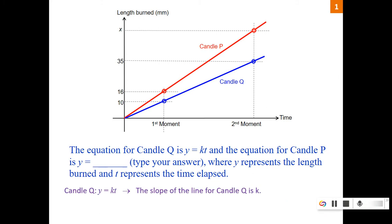Let me discuss the answer now. Since we know for candle Q the equation is y equals kt, that means we can conclude the slope of the line for candle Q is k. And earlier, we have seen that candle P burned 1.6 times as fast as candle Q. So the slope is 1.6k. If you know the slope is 1.6k, using the equation y equals mx plus b, in this case it passed through the origin, so b is 0.